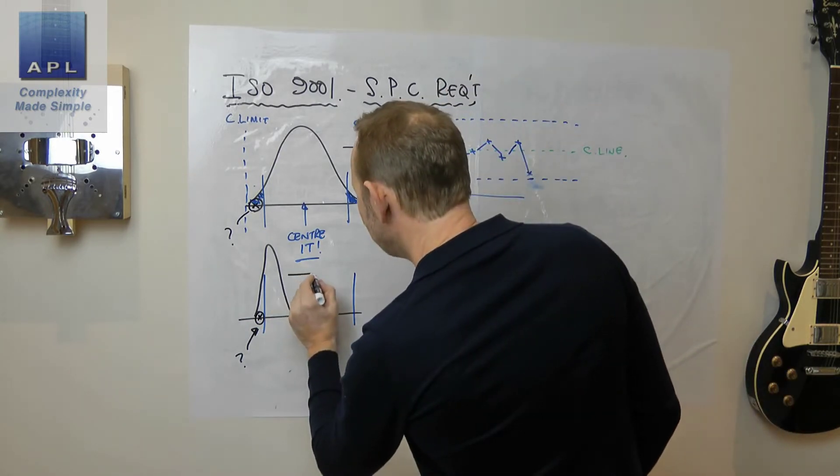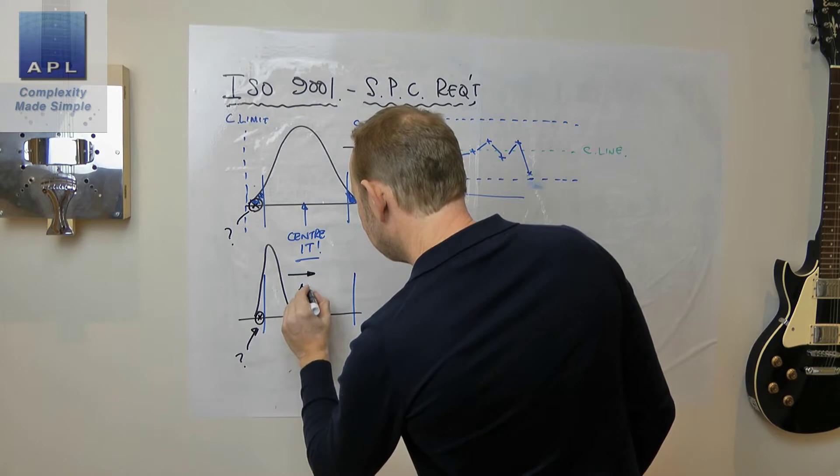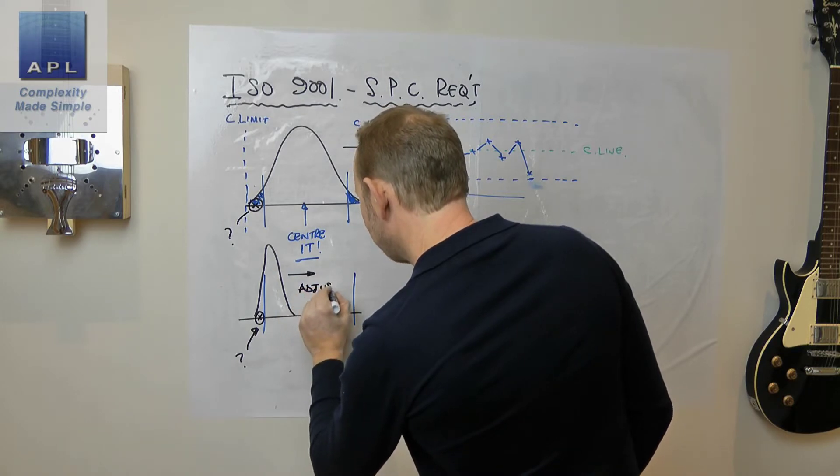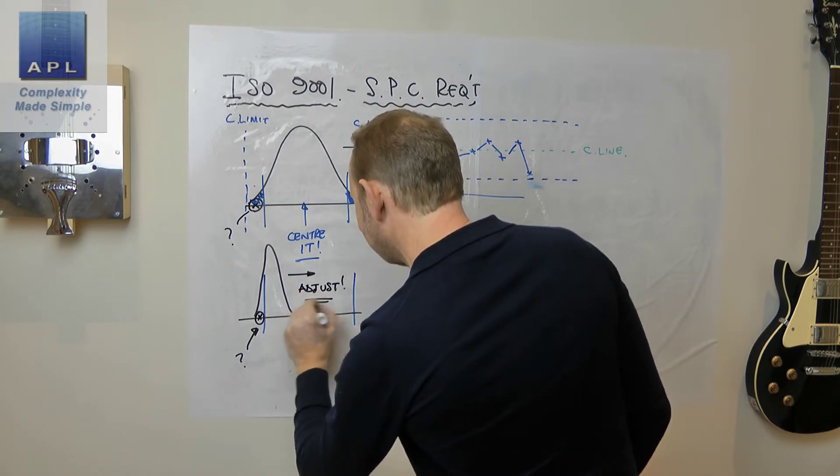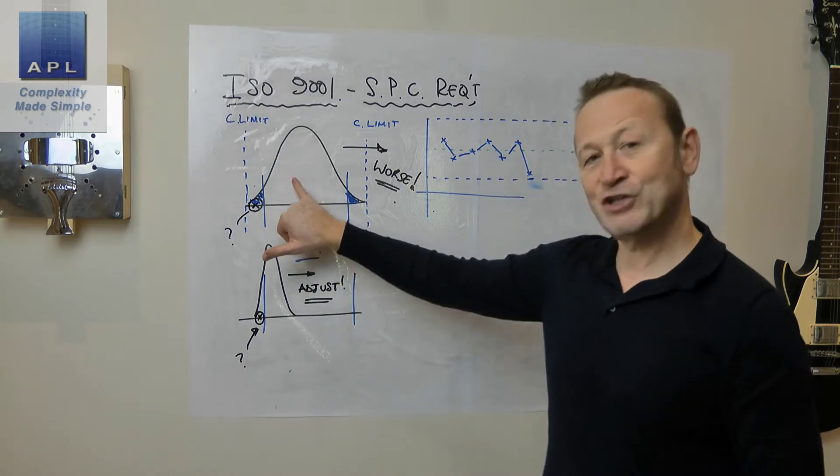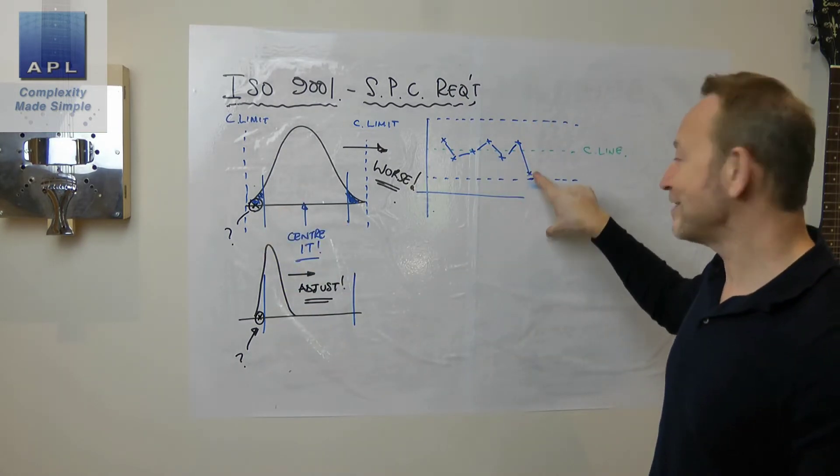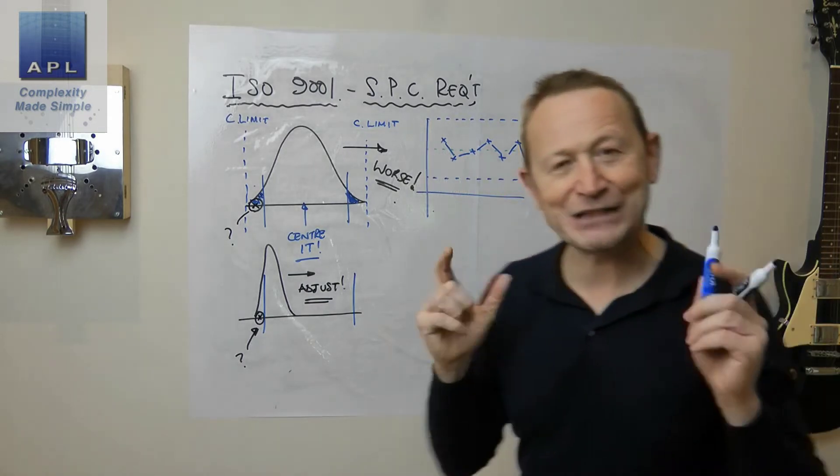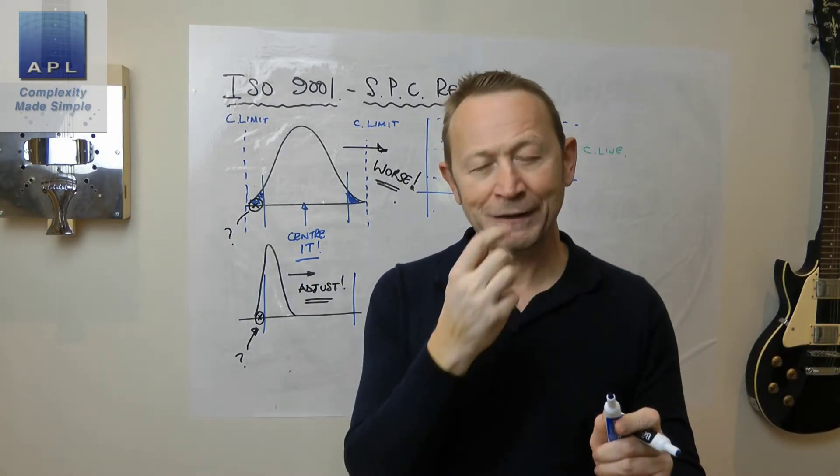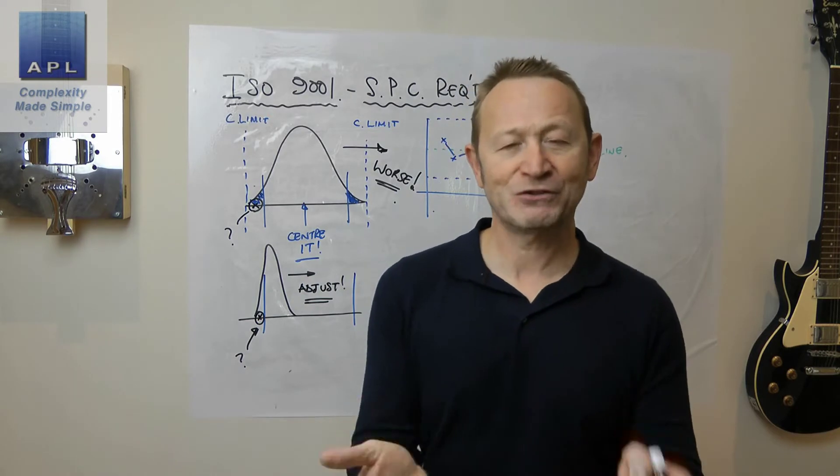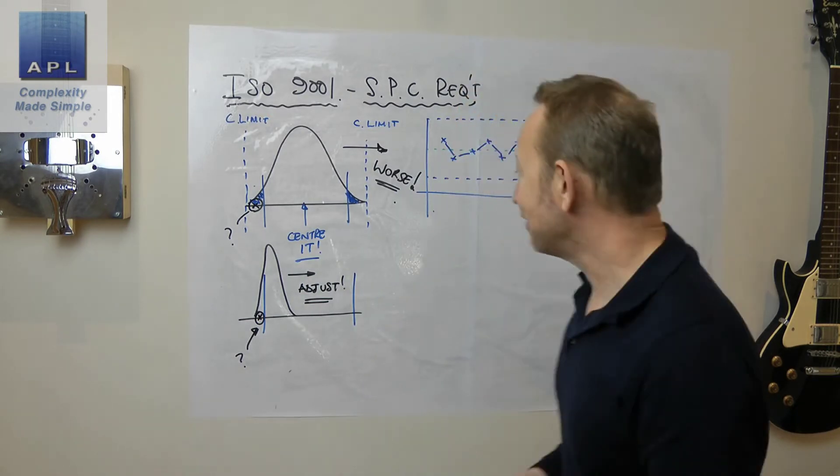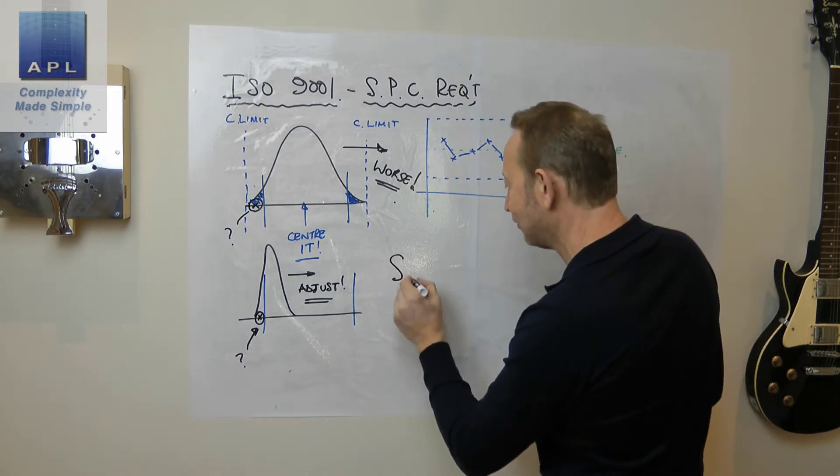Now is it appropriate for him to adjust this process? Well of course it is. He should adjust. He should adjust the process - that's correct. Here he shouldn't adjust. Here he should adjust. But what does the data point look like? It looks identical to him. How does he know how to make the right decision? He can only make a correct decision using an SPC chart.